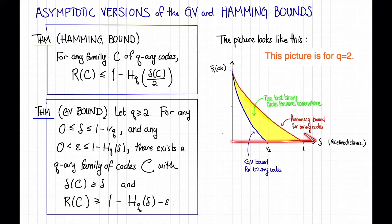So here on the x-axis, I'm plotting δ, the relative distance, and here on the y-axis, I'm plotting r, the rate. And we can plot these two tradeoffs.